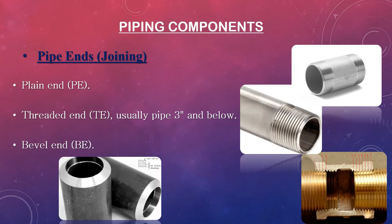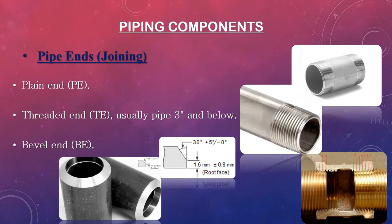Beveled ends are applied to all diameters of butt-weld flanges or butt-weld fittings, and are directly welded with a small gap of 3 to 4 millimeters to each other or to the pipe. Ends are mostly beveled to an angle of 30 degrees with a root face of 1.6 millimeters. These bevels are often applied by fabricators by hand or through automated processes to ensure consistency.